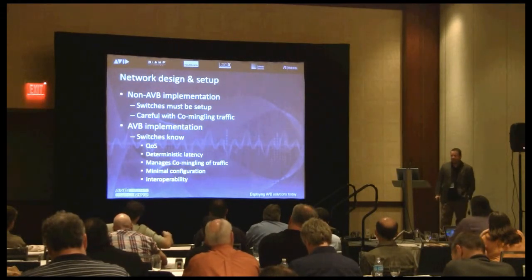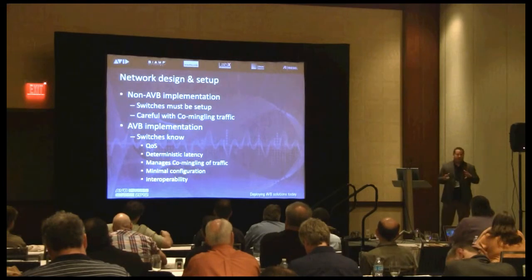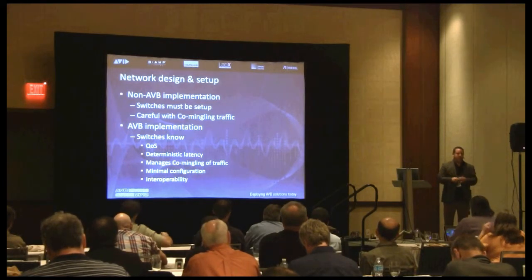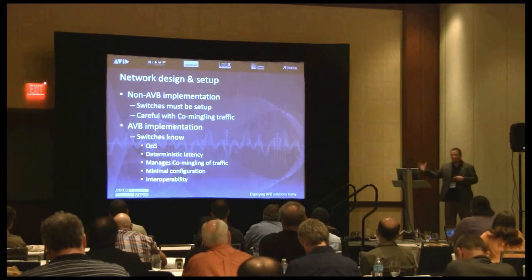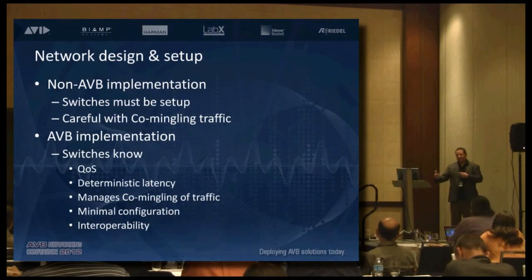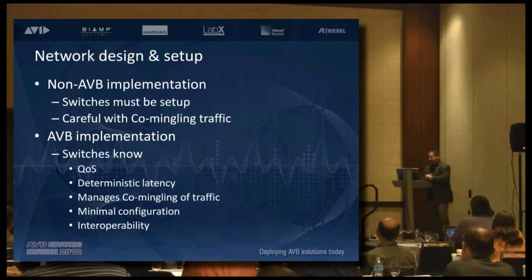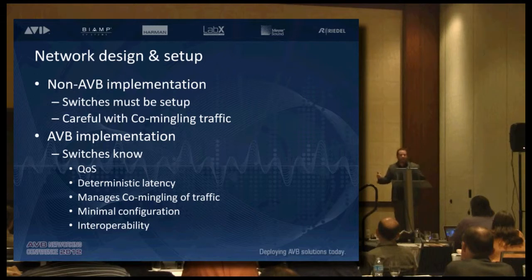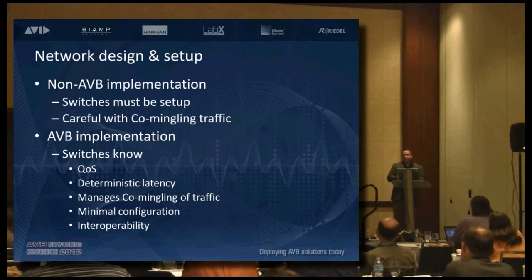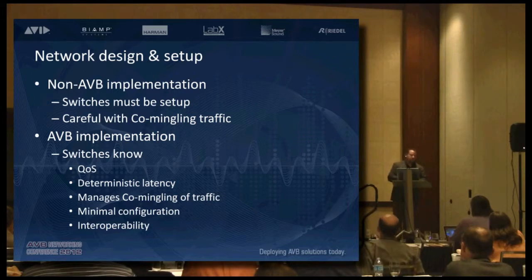With AVB, what I always like to say is the switches just know. They know about QoS, and they know about delivering things in a deterministic way. They manage co-mingling traffic — it knows what's AVB and what isn't, and what to do with it. That's important because we want to go into this system and say, with very little thought, just plug things in and make it work.